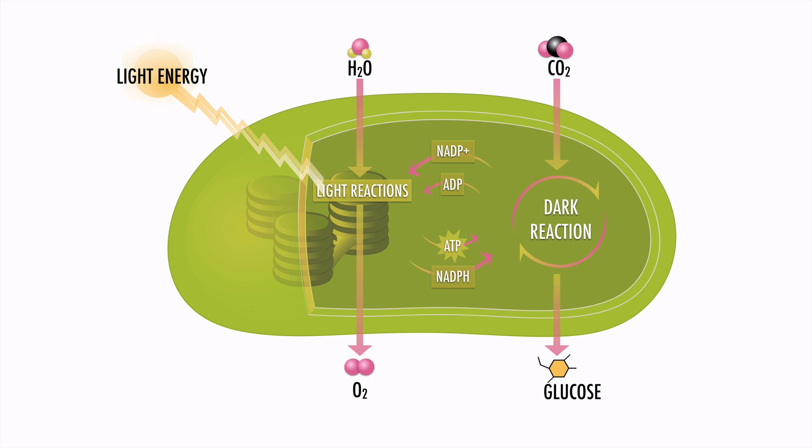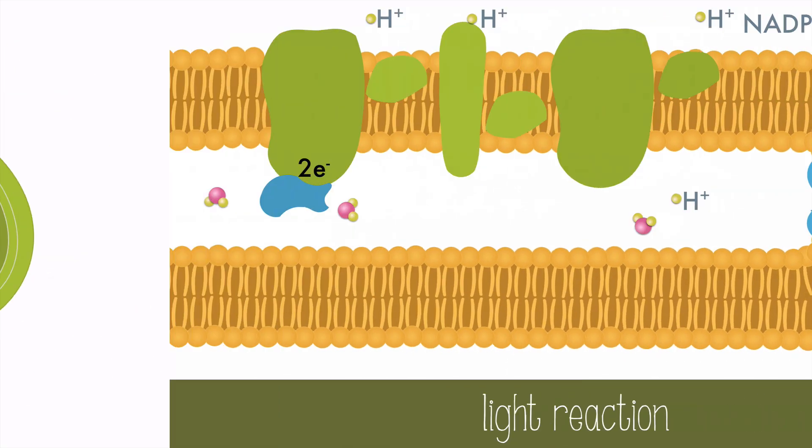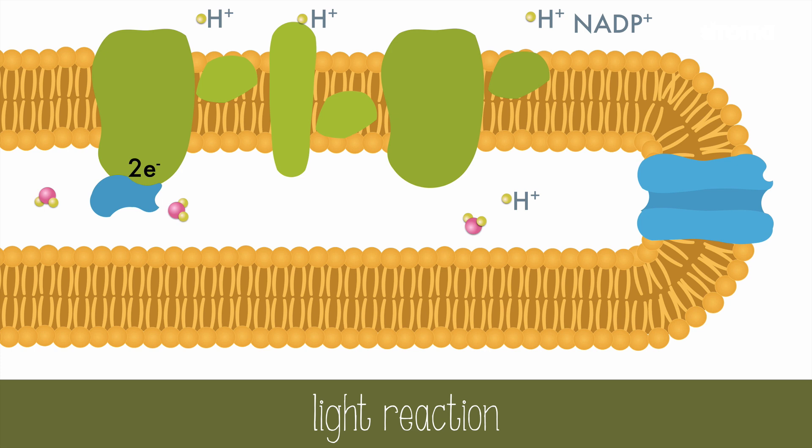Let's look at the light reaction up close. The membrane of the thylakoid discs have proteins embedded, which carry out the light reaction. Outside of the thylakoid disc is the stroma, and inside is the thylakoid space.